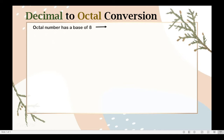These are 0, 1, 2, 3, 4, 5, 6, 7. And one way of converting decimal to octal is by using the repeated division by 8 method.